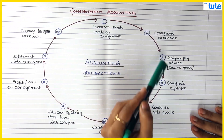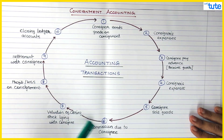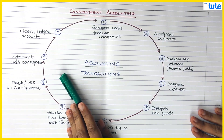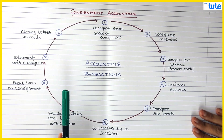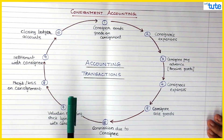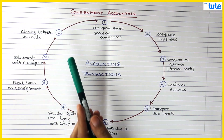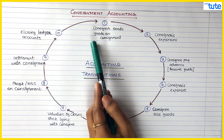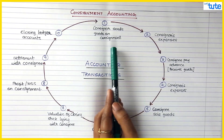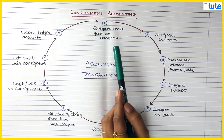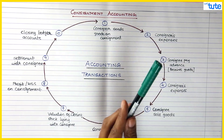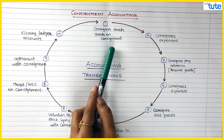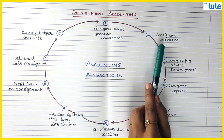These are the common 10 steps or 10 transactions in consignment that you'll see in almost all the problems. There are some additional transactions also which we will see in further sessions. The first step is when the consigner sends goods on consignment — from there all the transactions begin. So step one is: consigner sends goods to the consignee.